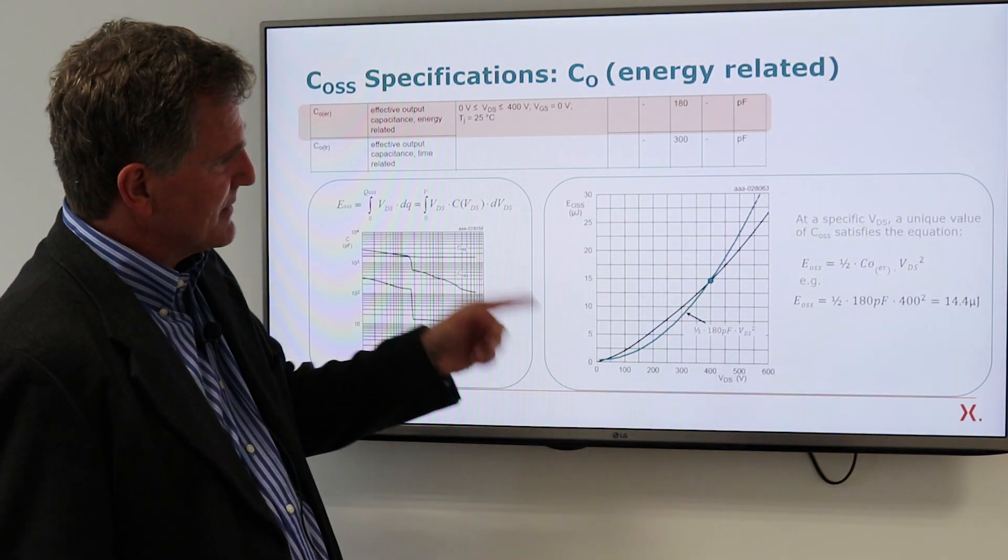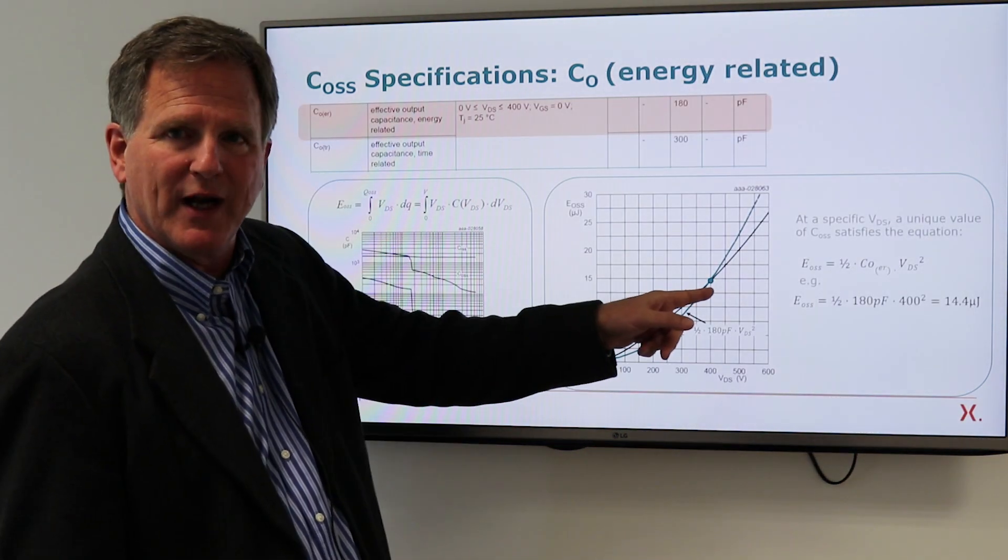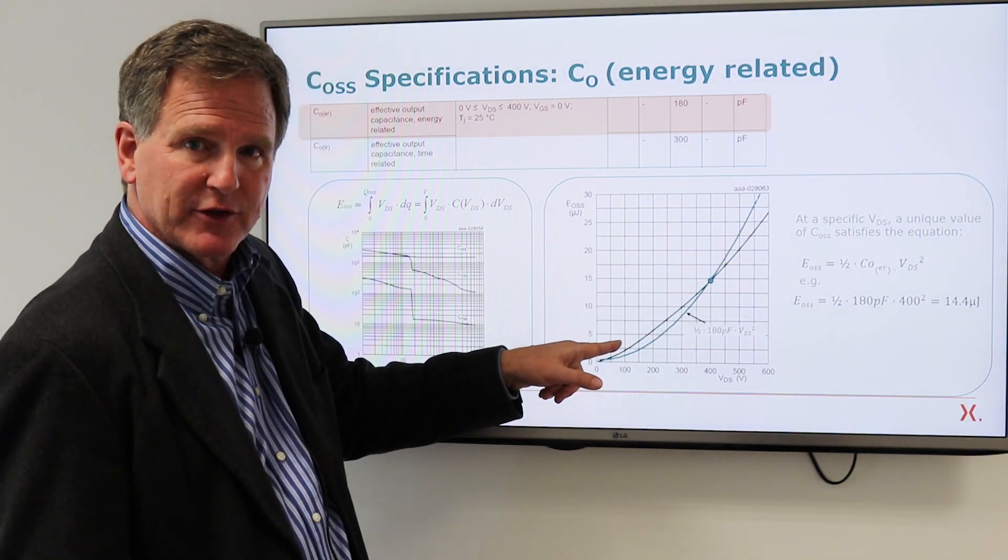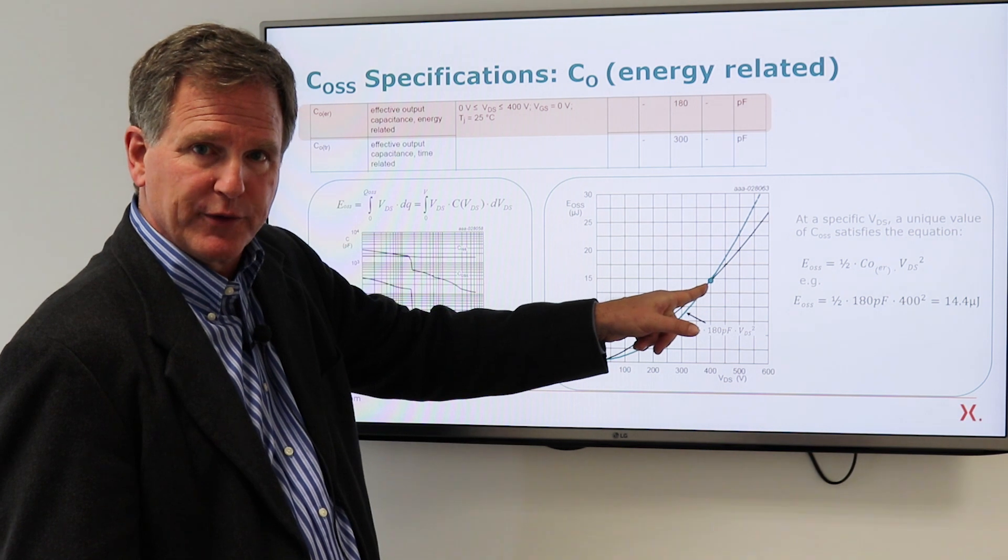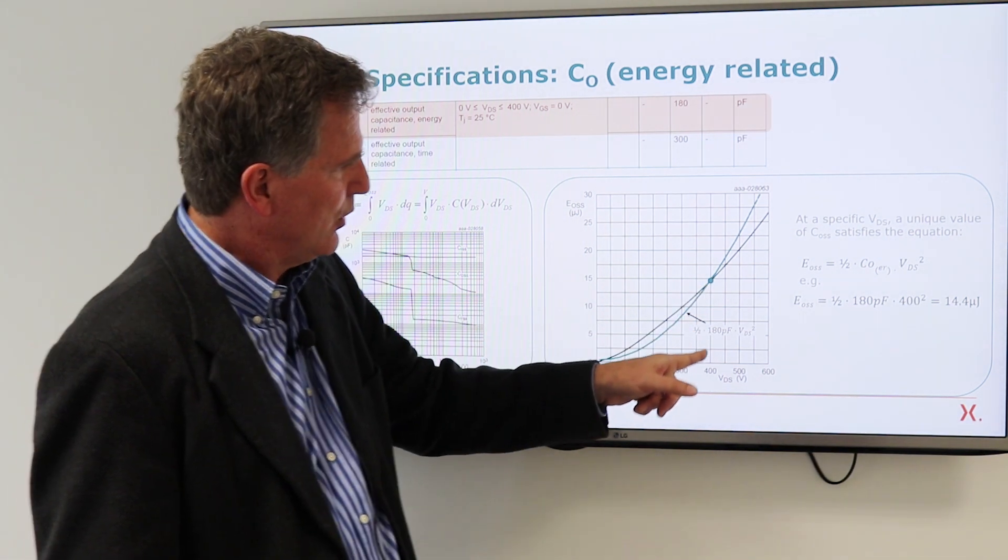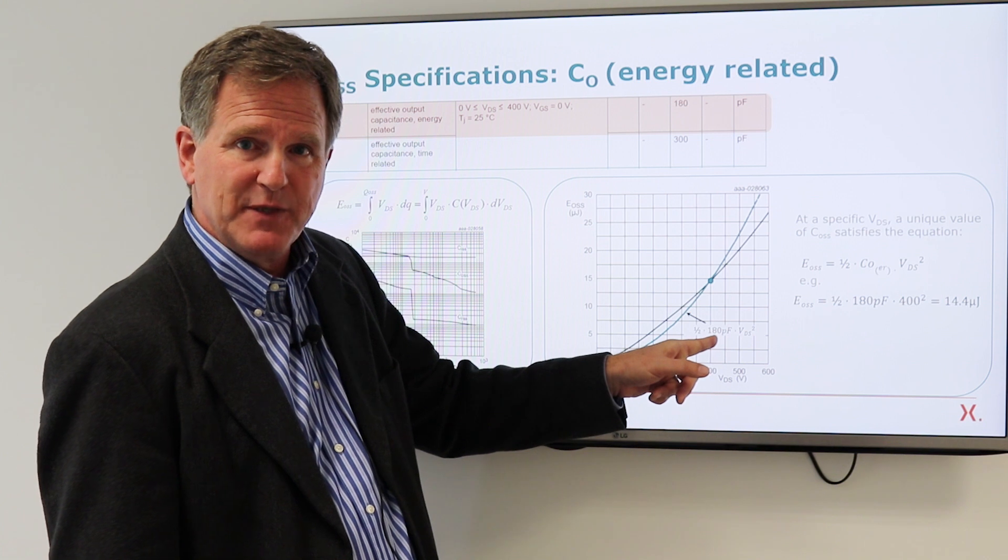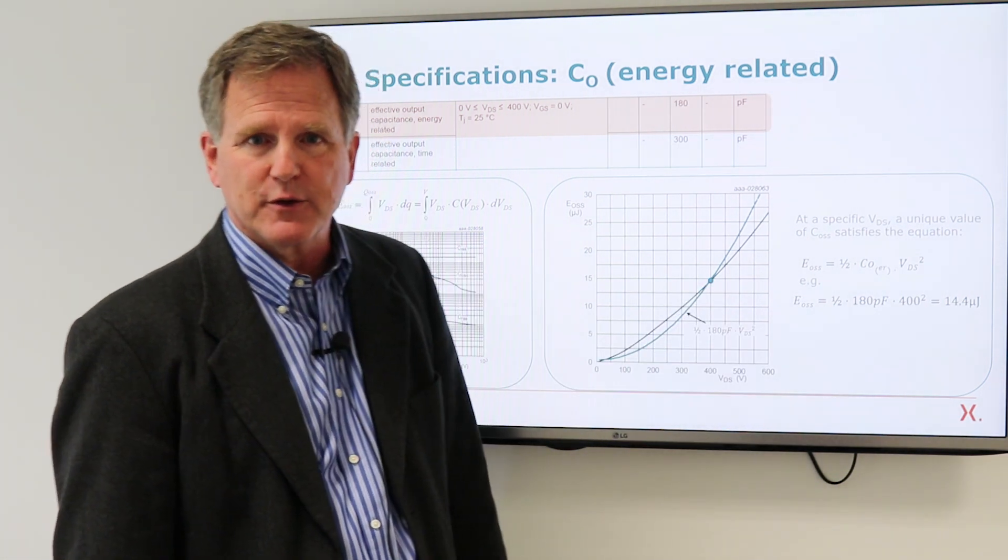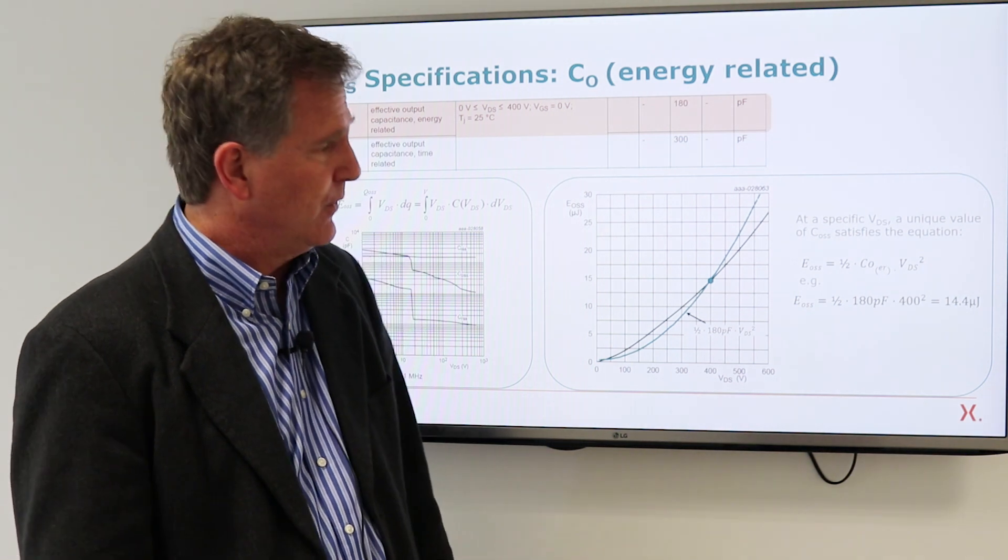Okay, so the energy related output capacitance defines a parabola that exactly matches the actual EOSS curve at one specific voltage. So at 400 volts, a capacitance of 180 picofarads will correctly predict 14.4 microjoules, but only at 400 volts.